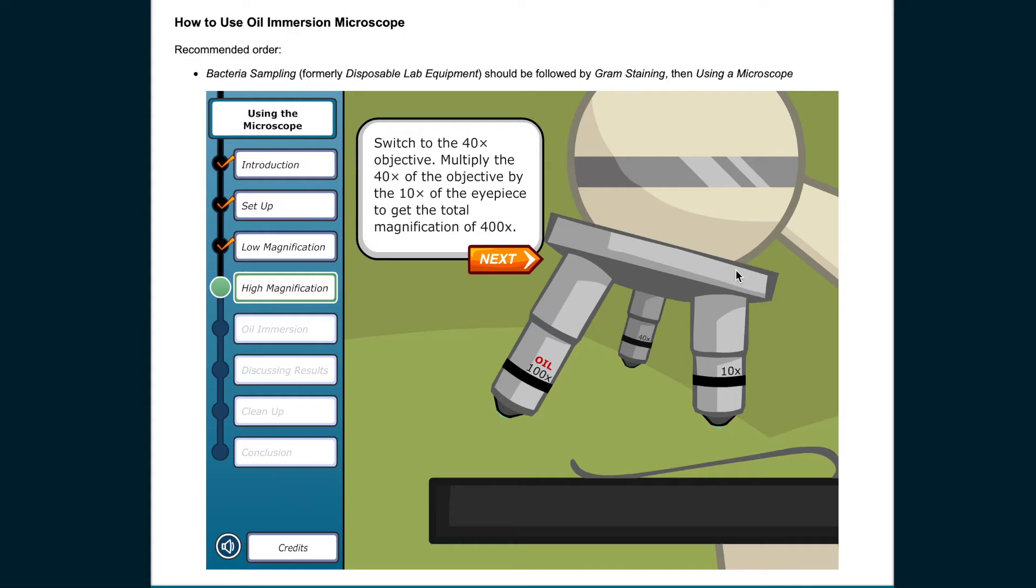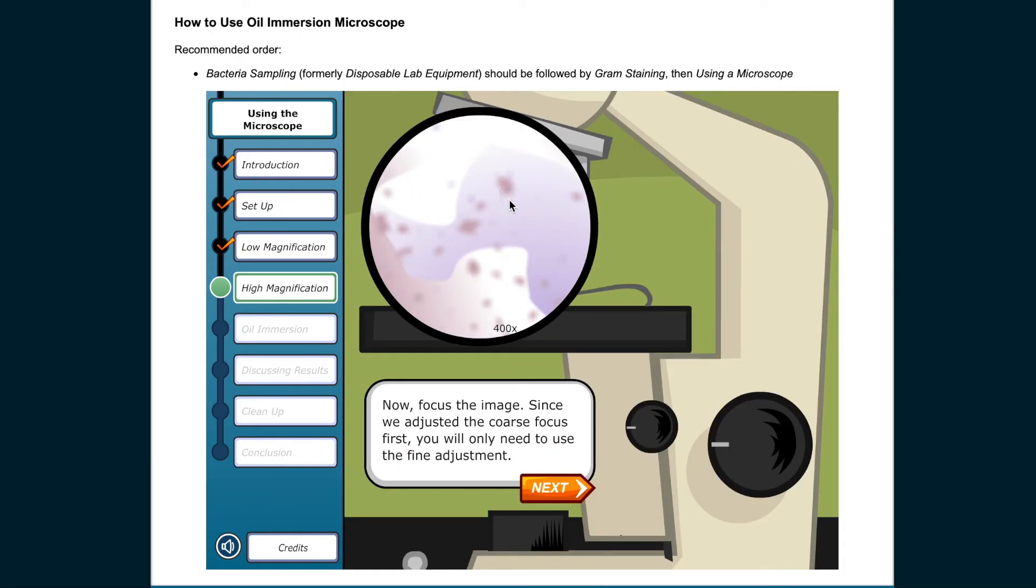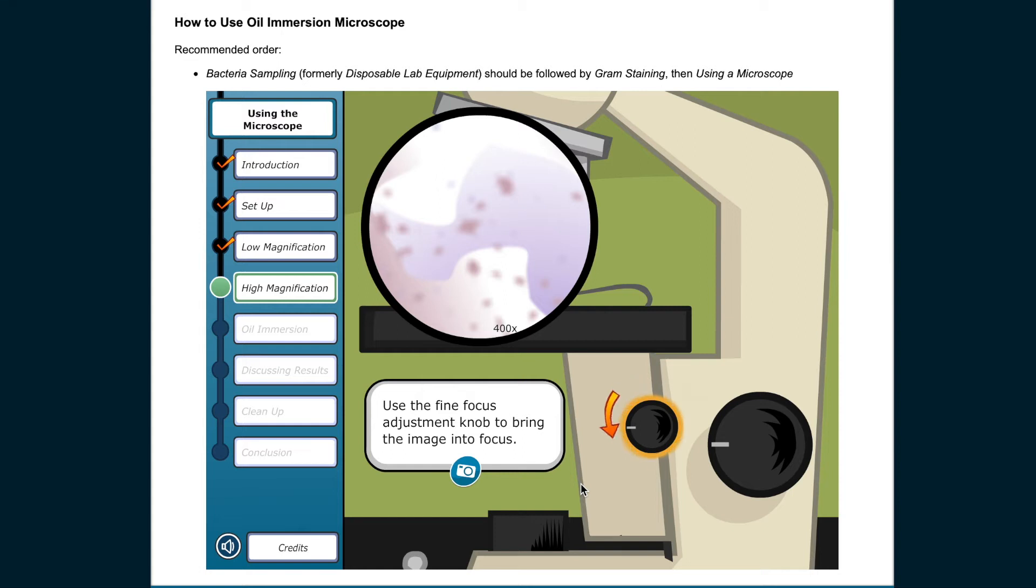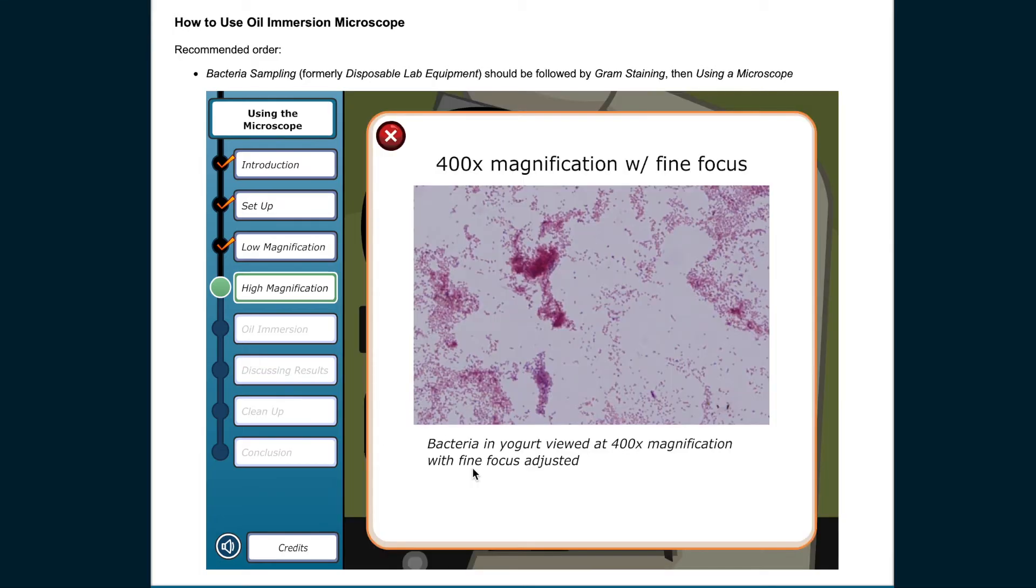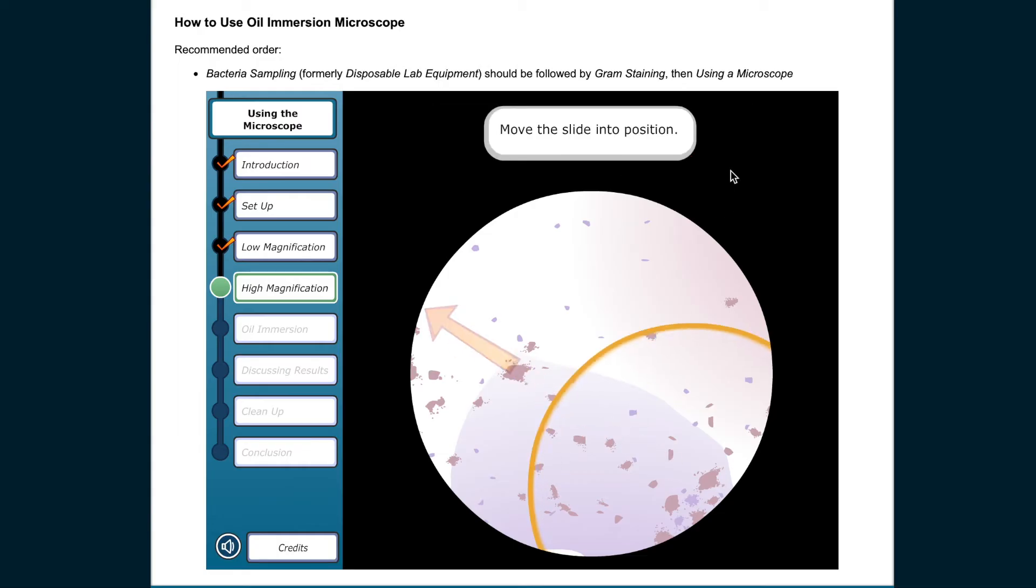Switch to the 40 times objective. Multiply the 40 times of the objective by the 10 times of the eyepiece to get the total magnification of 400 times. Rotate the nose piece to the 40 times objective. Now focus the image. Since we adjusted the coarse focus first, you will only need to use the fine adjustment. Use the fine focus adjustment knob to bring the image into focus. Slightly adjust the slide on the stage for the best possible view of the bacteria through the eyepiece.